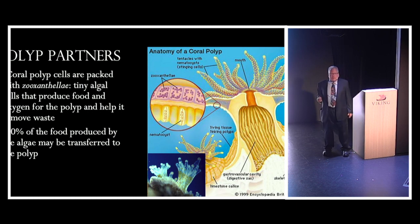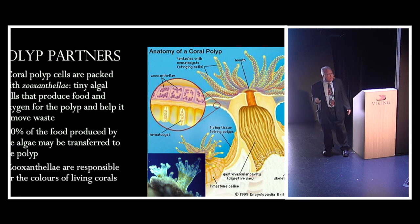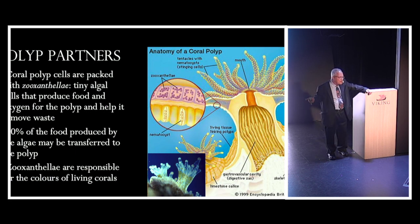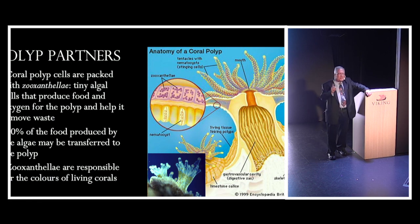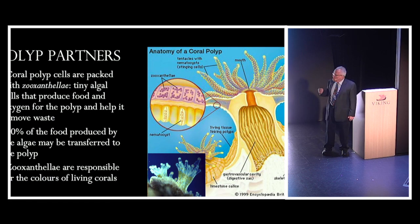The zooxanthellae are also responsible, from a visual point of view, for giving the corals their color. The color you see on living corals is the color of these algae, not the color of the polyps themselves. And that becomes rather important — we'll talk about this later when we discuss coral bleaching, which is a major problem today.